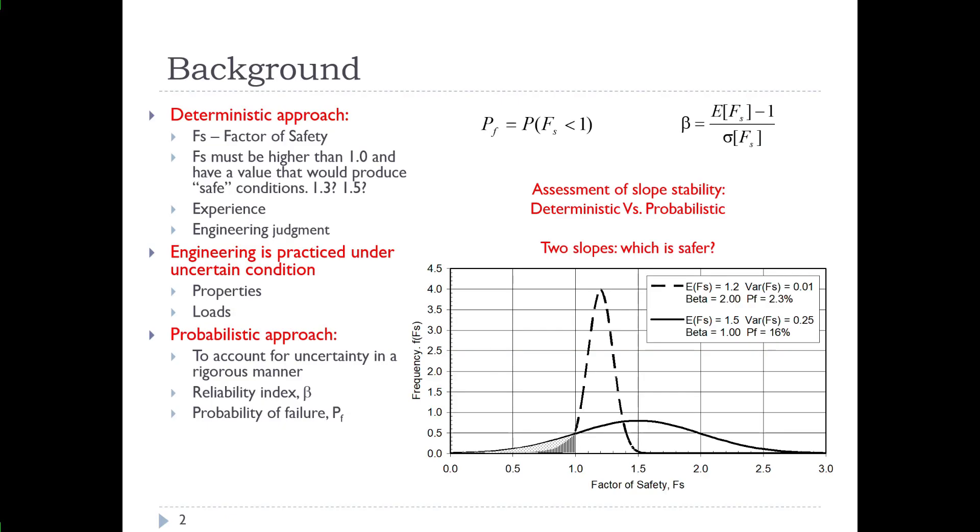Just to give you a bit of background on this topic, we often focus on deterministic analyses of sites and we calculate a factor of safety and we assume that the factor of safety of course must be higher than one and must produce a safe condition which we interpret to be either 1.3 or 1.5.